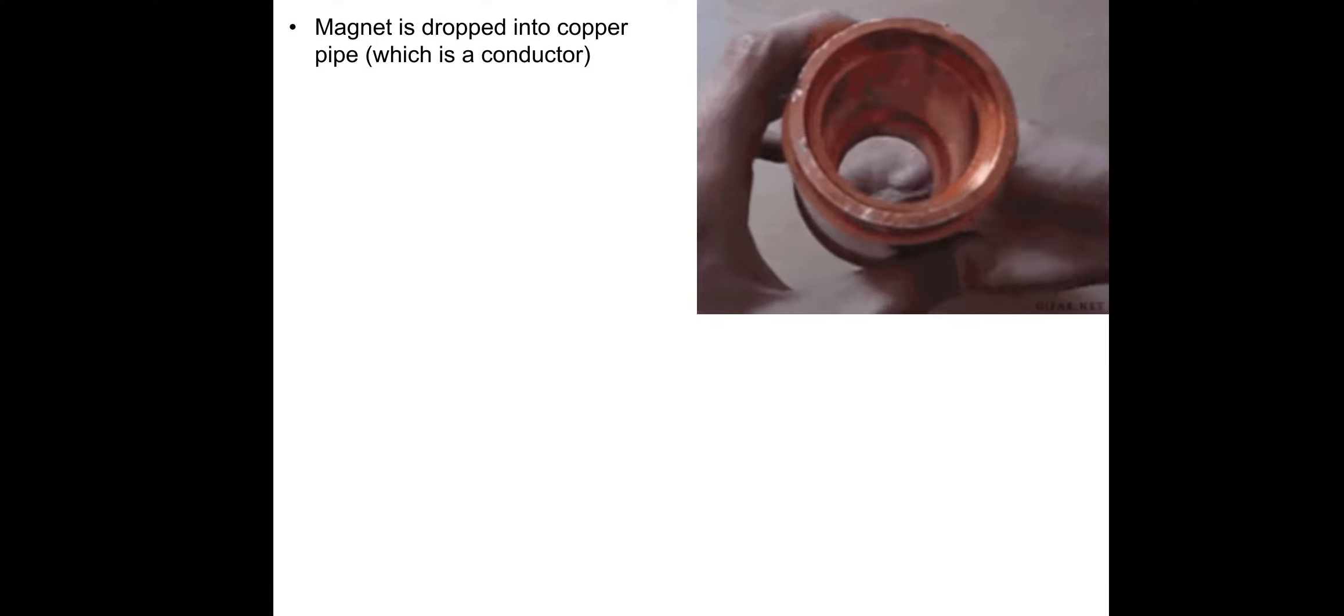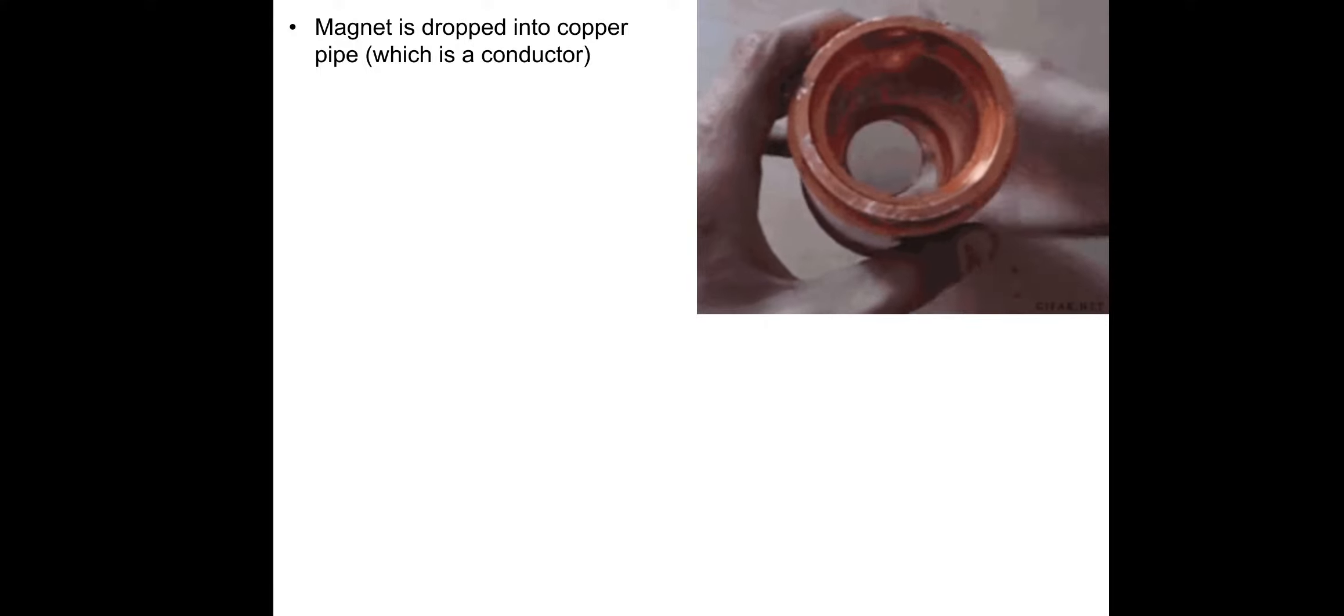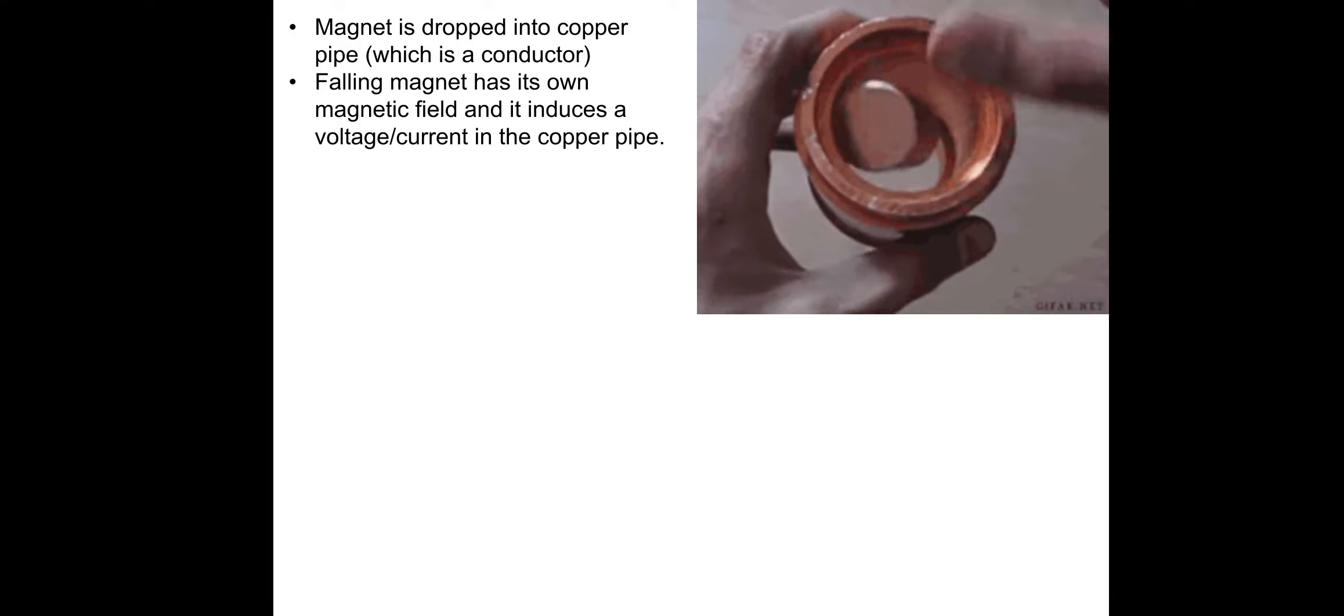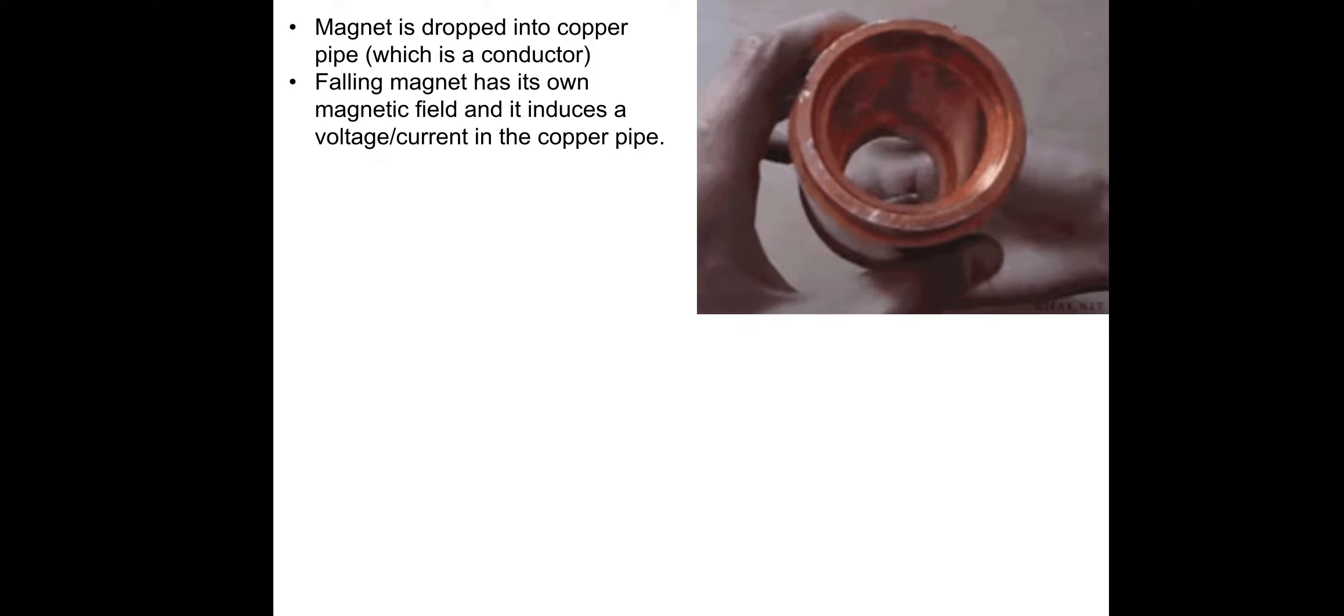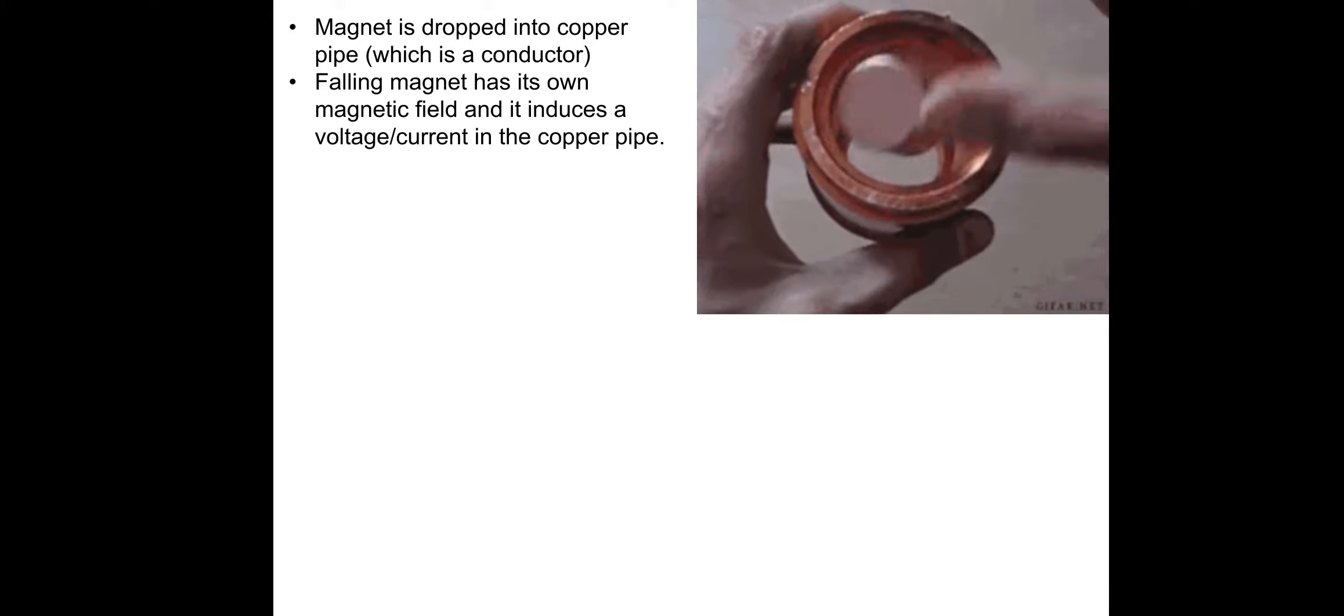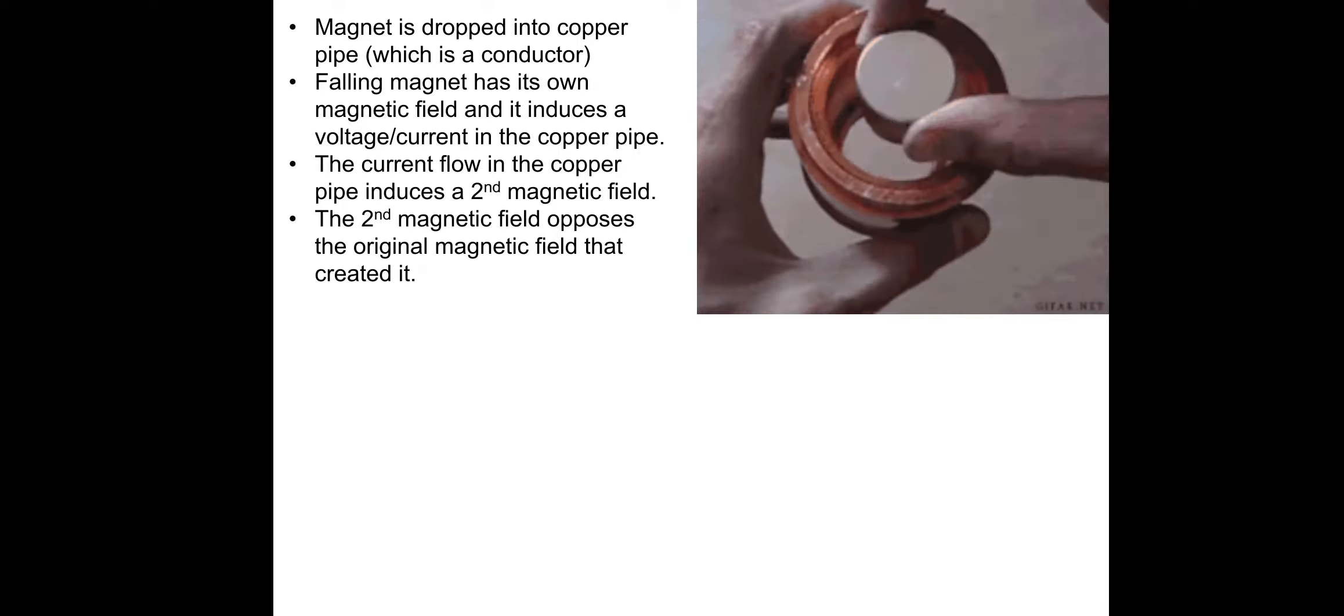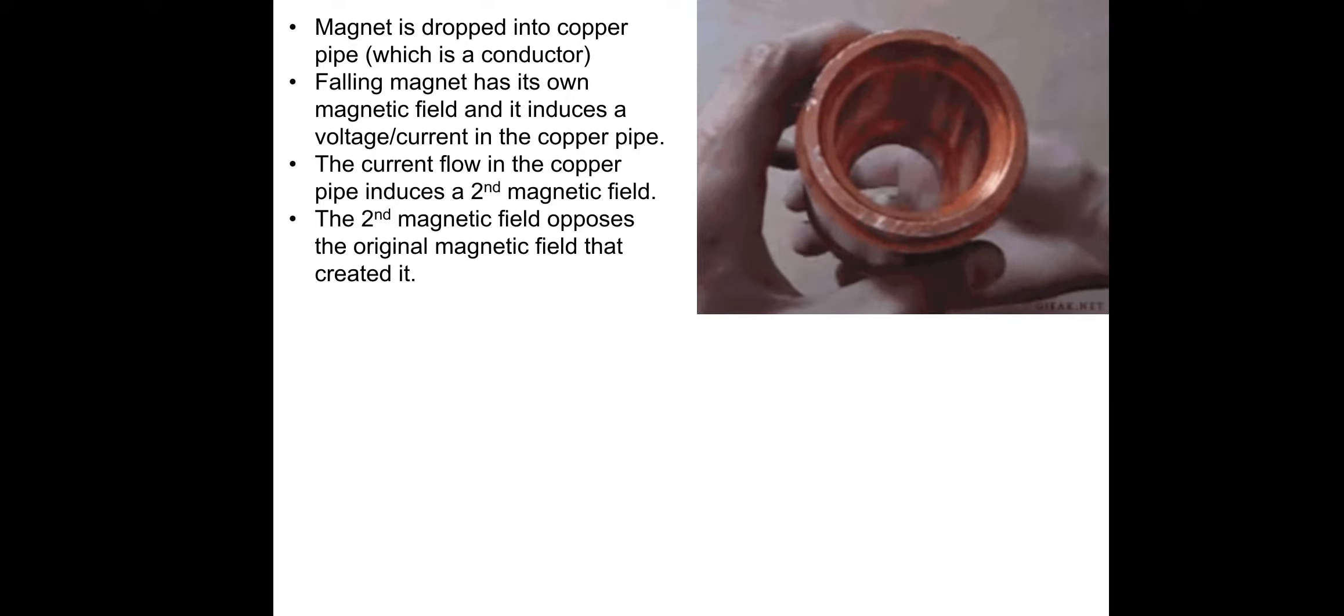A magnet is dropped into a copper pipe, which is a conductor. The falling magnet has its own magnetic field, obviously, and it induces a voltage slash current, or therefore a current, in the copper pipe itself. So the current flowing in the copper pipe induces a second magnetic field, its own magnetic field. And the second magnetic field, coincidentally, opposes the original magnetic field that created it.